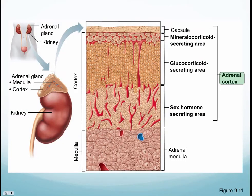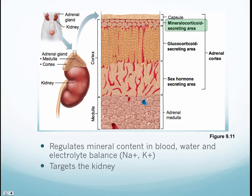Here are the three different layers that comprise the adrenal cortex. We have mineralocorticoids — the outermost region — then glucocorticoids, and then the sex hormone secreting area. We're going to start with the mineralocorticoid region. It's given that name because it deals with mineral content being regulated, specifically sodium and potassium.